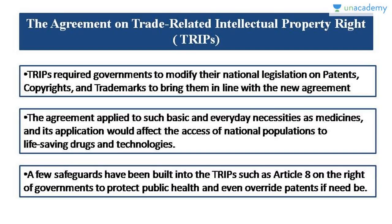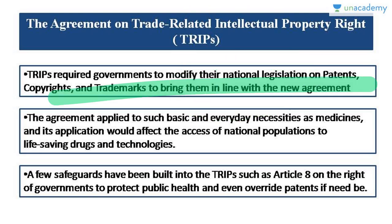TRIPS covers areas like copyrights, trademarks, geographical indications, patents, layout design, and undisclosed information including trade secrets. A country joining WTO has to sign this agreement. If some violation occurs, a country can drag the violating country into the dispute settlement mechanism, and if the recommendation is not accepted, retaliation can take place. When a country signs TRIPS, the government is required to modify national legislation on patent, copyright, and trademark to bring them in line with the agreement — it is quite intrusive as you have to make changes within your own domestic laws.